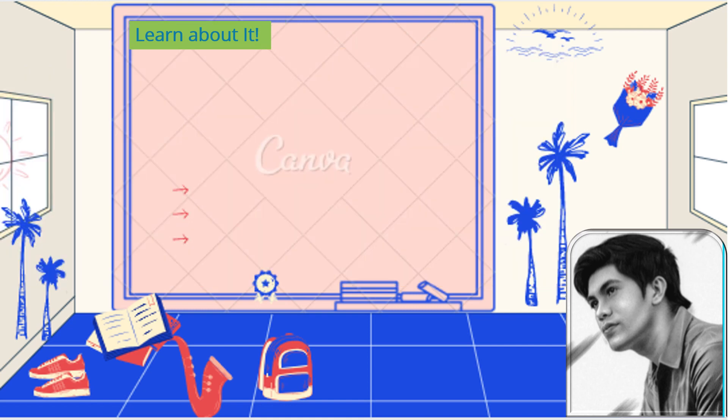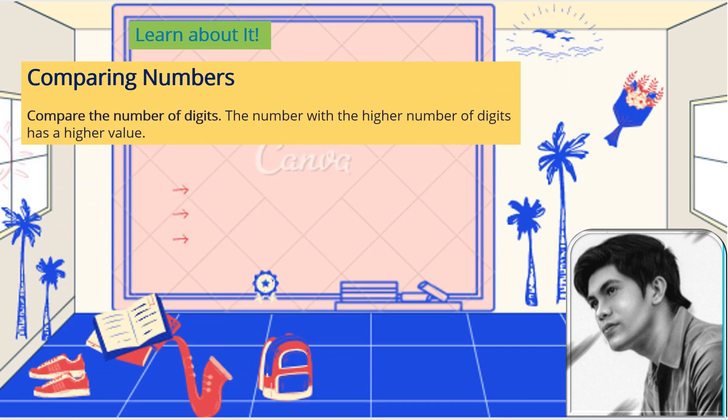In comparing numbers, first compare the number of digits — the number with the higher number of digits has a higher value. For example, 1,000 has 4 digits and 100 has 3 digits, so 1,000 is greater. That's what 'higher number of digits has a higher value' means.